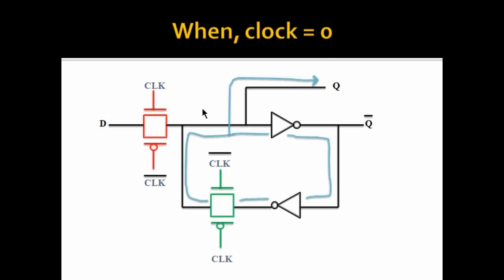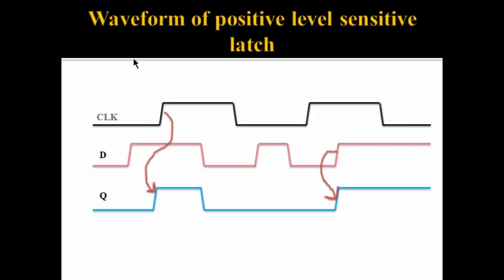When the clock is low, the first transmission gate turns off and the second transmission gate turns on. I have shown an off transmission gate in red and an on transmission gate in green. So when the clock is low, new data stops entering the latch and we get only the previously stored value at the output. As we saw earlier, for a positive level sensitive latch when the clock is low, the new data does not reflect at the output. As soon as the clock turns high, the data starts reflecting at the output.